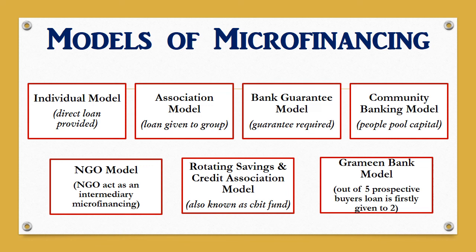The next is the rotating savings and credit association model, where a group of individuals come together to contribute to a common fund which can be given to its members in each cycle. At the end of each cycle or month, the total fund is collected and given to another member. This fund is also known as CHIT funds.